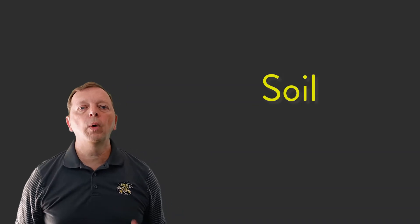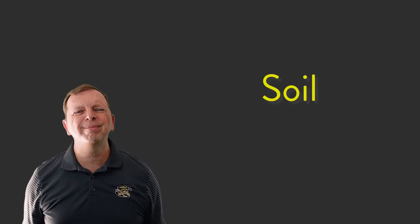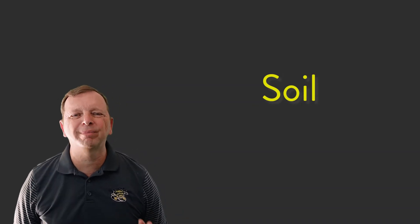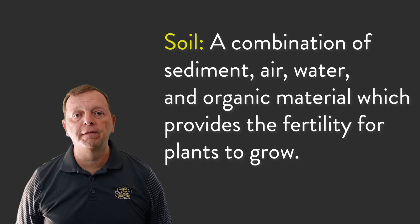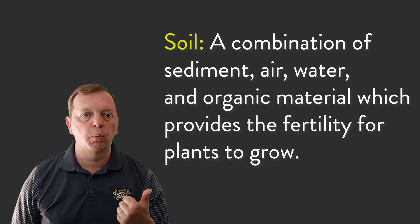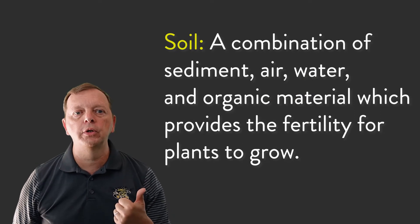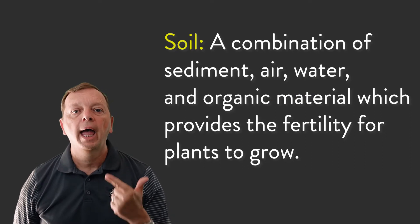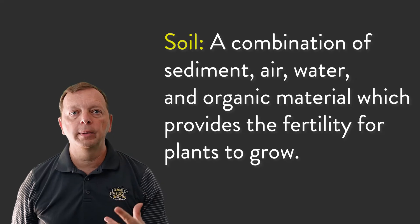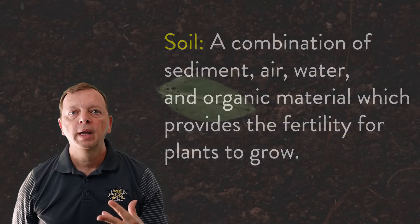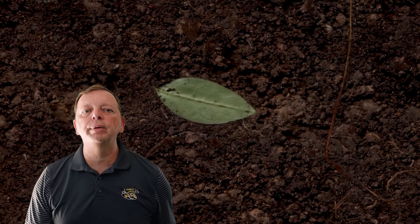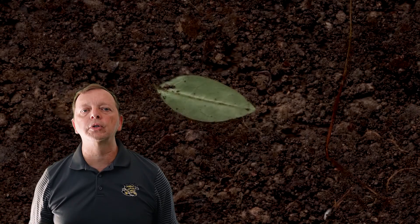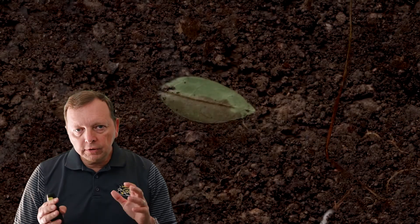What is soil? Well, it's dirt, but there's more to it. Soil is actually a combination of four things: sediment — which is why deposition is so important — air, water, and organic material. When we talk about organic material, we're talking about decaying plants and animals. This could be manure, leaves, decomposing animals — essentially anything that used to be alive but no longer is.